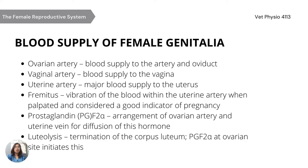For the blood supply of female genitalia, we have the ovarian artery, which supplies blood to the ovary and oviduct, and the vaginal artery, which supplies blood to the vagina. The uterine artery is the major blood supply to the uterus. Fremitus is a vibration of blood within the uterine artery when palpated and is considered a good indicator of pregnancy. The arrangement of the ovarian artery and uterine vein allows diffusion of a hormone called prostaglandin or PGF2-alpha. Luteolysis is the process of termination of the corpus luteum, which is initiated by PGF2-alpha at the ovarian site.